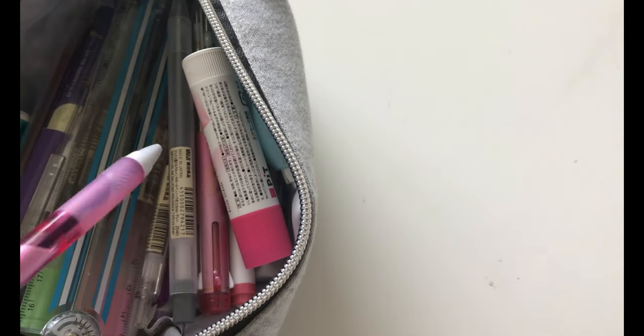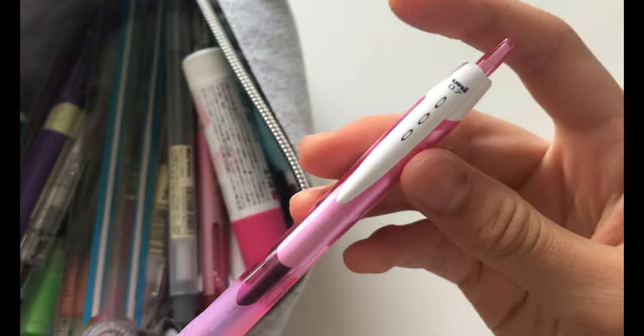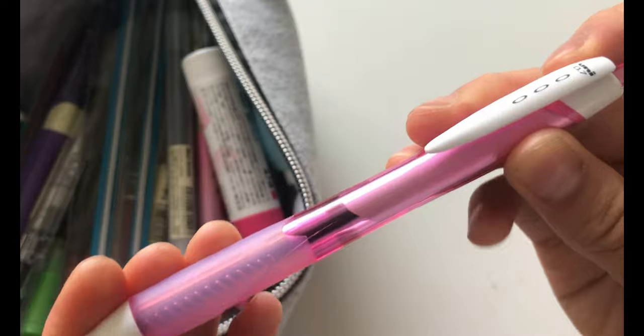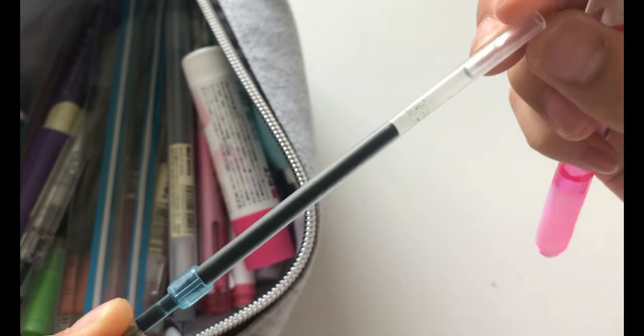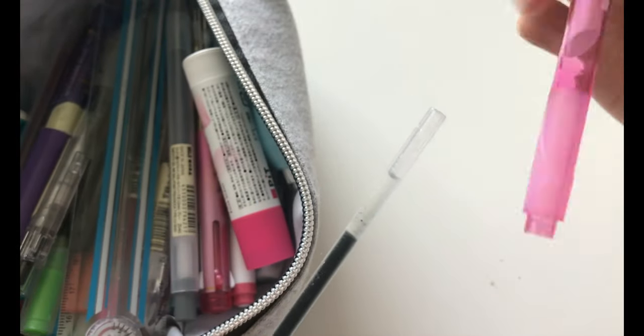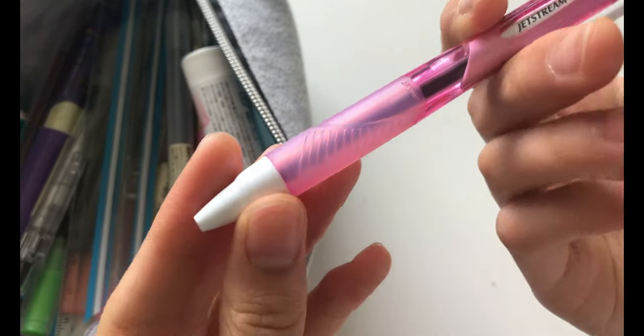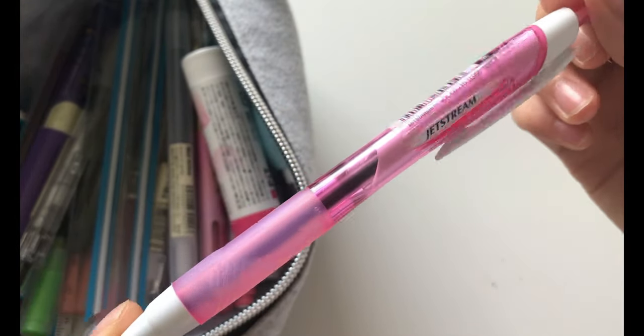The next pen is the Uni Jetstream in the size 0.7. So I don't really use this that much, but I really like it because it glides on like a ballpoint pen, but it looks like a gel pen. So if you guys like a gel ink pen, but also ballpoint pens, I would definitely recommend this pen.